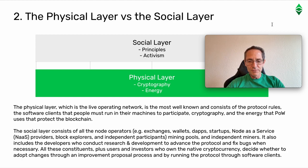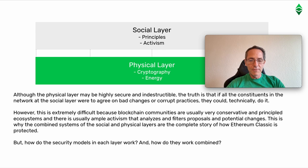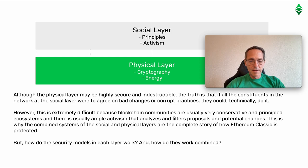The social layer also includes the developers who conduct research and development to advance the protocol and fix bugs when necessary. All these constituents, plus users and investors who own the native cryptocurrency, decide whether to adopt changes through an improvement proposal process and by running the protocol through software clients. Although the physical layer may be highly secure, if all the constituents at the social layer were to agree on bad changes or corrupt practices, they could technically do it. However, this is extremely difficult because blockchain communities are usually very conservative and principled ecosystems, with ample activism that analyzes and filters proposals and potential changes.